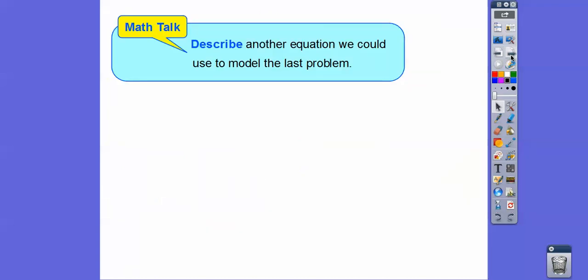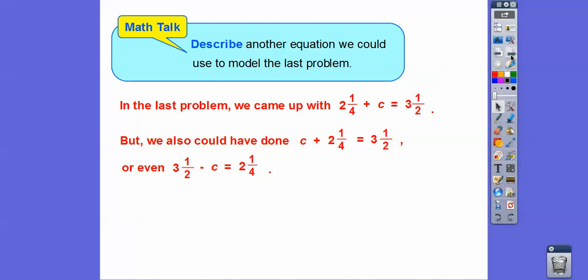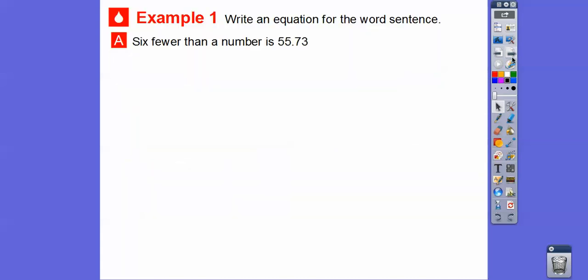All right, so describe another equation we can use in that last one with Sophia and her cups. Well, in the last problem we came up with 2¼ plus C equals 3½, but this is called the commutative property of addition. These guys commuted around the addition sign, so they're equivalent statements. We can write it as C plus 2¼, that's what this says, equals 3½, or we can take this 3½ right here and subtract C, and that'll give us 2¼, or we can do 3½ minus 2¼ and that'll give us how many cups C.